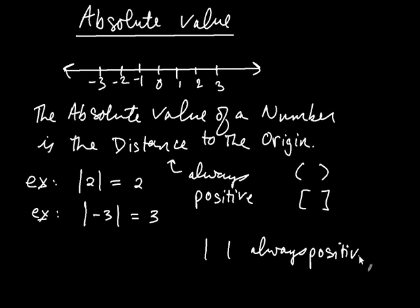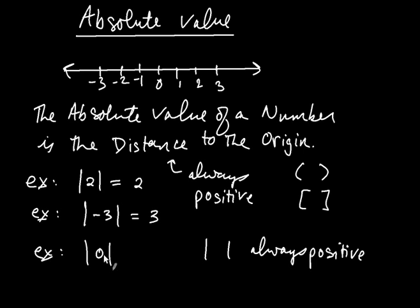And because the absolute value is the distance, the absolute value of a number is always positive — or actually it can be 0 as well. For example, what is the absolute value of 0? That's like saying how far is 0 from the origin. Well, 0 is 0 miles from the origin. So the absolute value is always positive or 0.